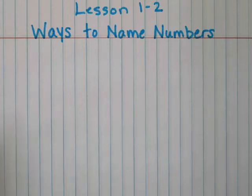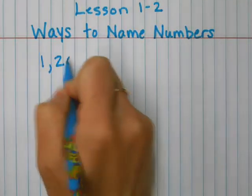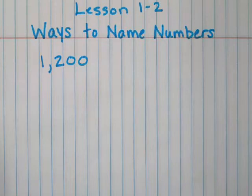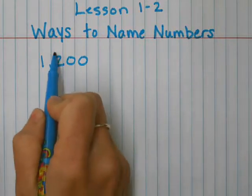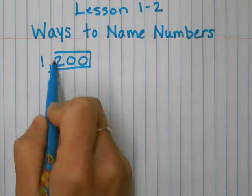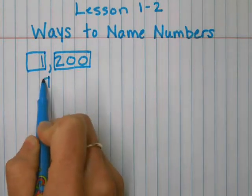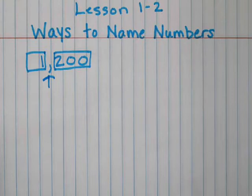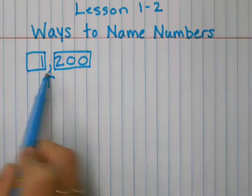We're going to start with the number 1,200. Now I know that this is 1,200 because the videos that we showed yesterday taught you that this is the one period and this is the thousands period. And when you get to the comma, you say thousands. So you would read this as 1,200.